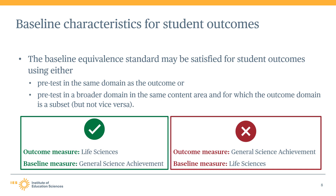If a single pretest in a broader domain is unavailable, study authors may include multiple pretest measures that collectively represent a broader domain. For example, if the outcome measure of interest is in the life sciences domain, the baseline equivalence standard may be satisfied using a measure of general science achievement. However, if the outcome measure of interest is general science achievement, the baseline equivalence standard cannot be satisfied using only a measure in the life sciences domain.